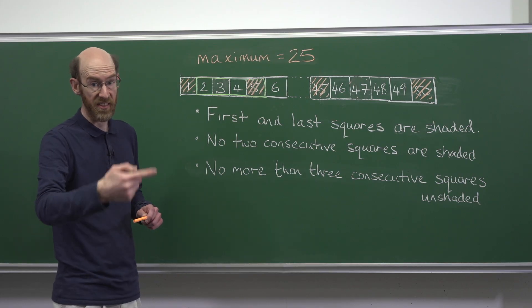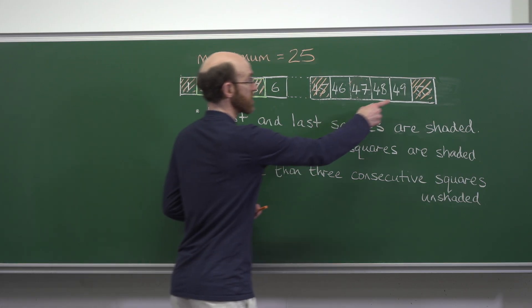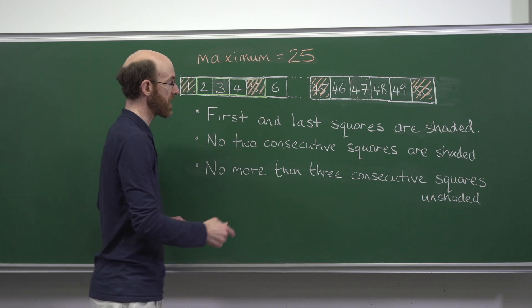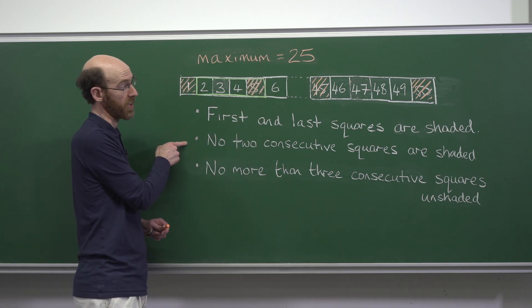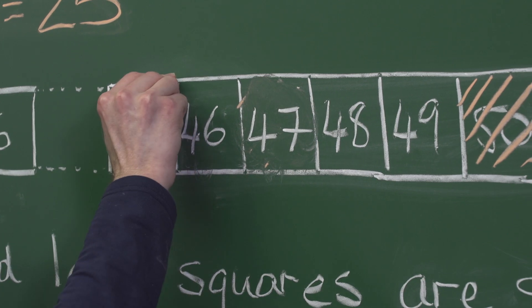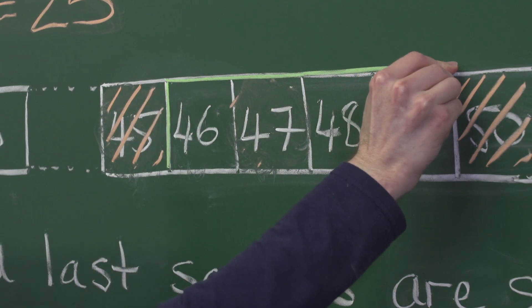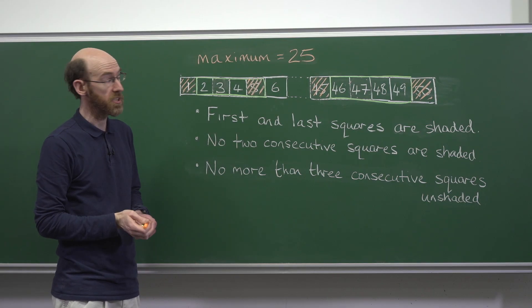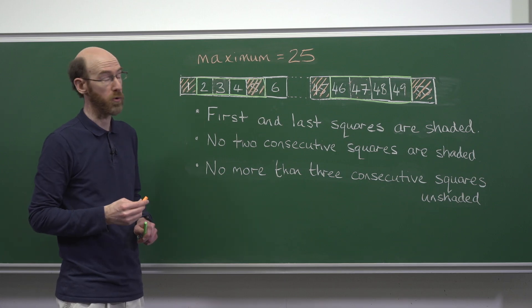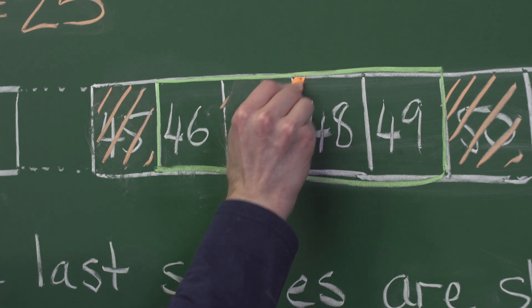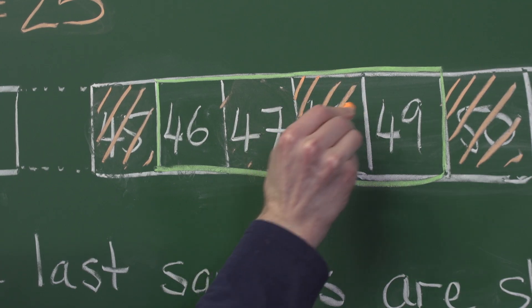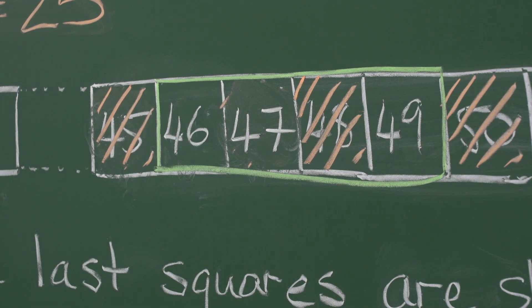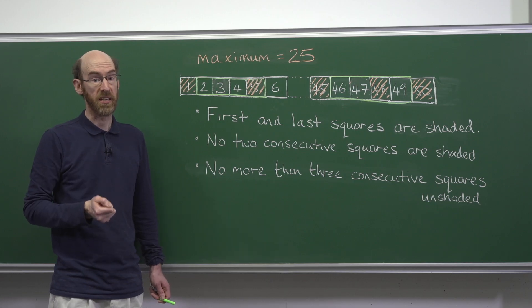But in this last one we have a choice of either choosing 47 or 48 for our 14th square. So the minimum number of squares we can shade is 14.